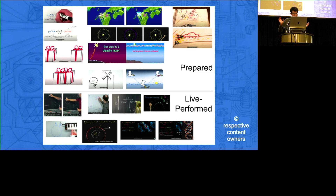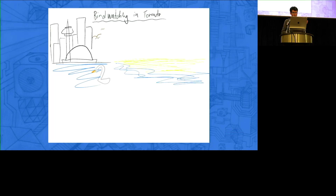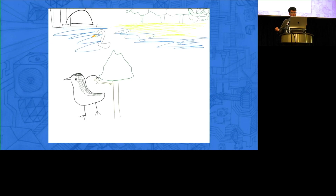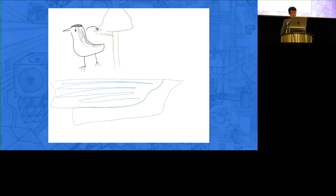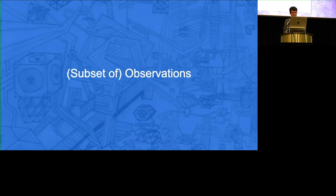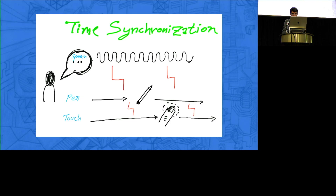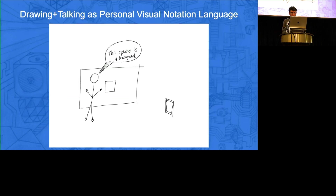I looked at sketch-based animation and presentations that people have made — prepared and live performed — to look at their patterns. I also did a formative study where I asked participants to draw out a personal story while explaining it to me, to get a sense of what those workflows were like. A subset of observations from the paper: it's obviously multimodal — people are moving things around, talking and drawing at different points. People never really talk specifically about an object they're drawing while drawing it. They'll go back to work on things they worked on before, update the canvas. There's this idea of flexibility going on as they're going through their creative process.